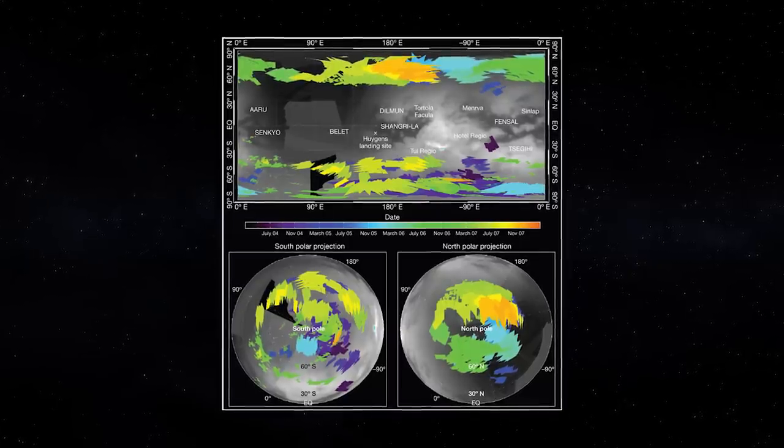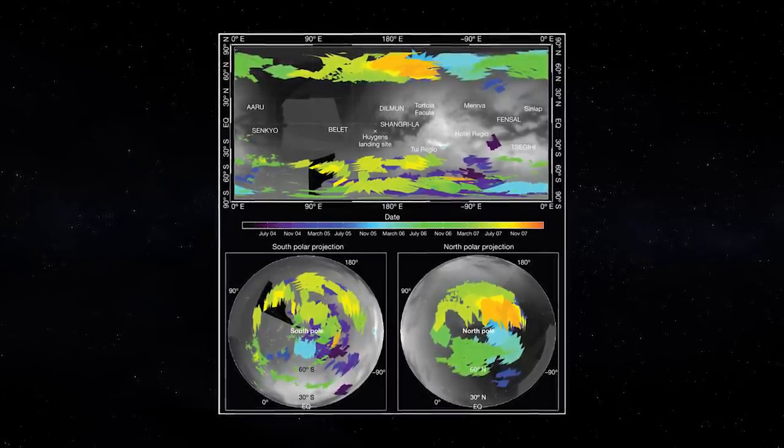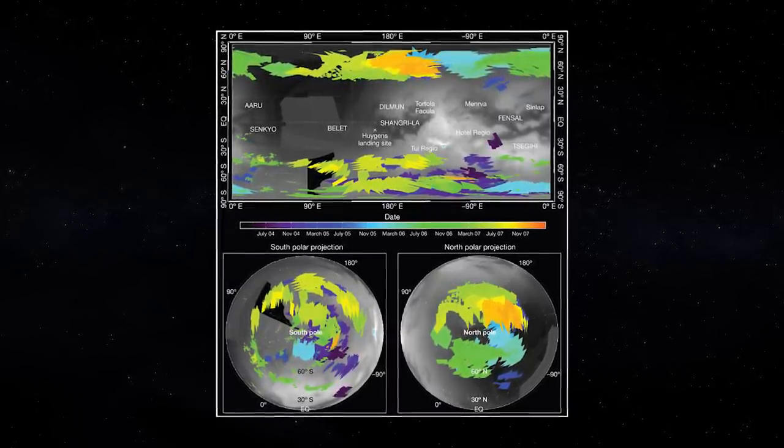Different gases will condense at different temperatures, resulting in a layering of clouds over a range of altitudes.